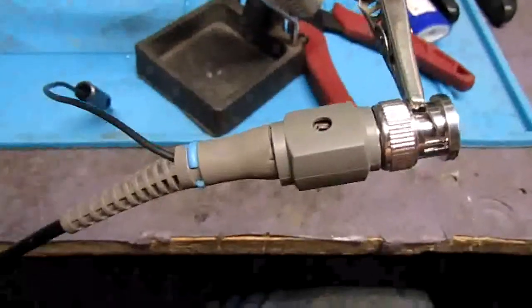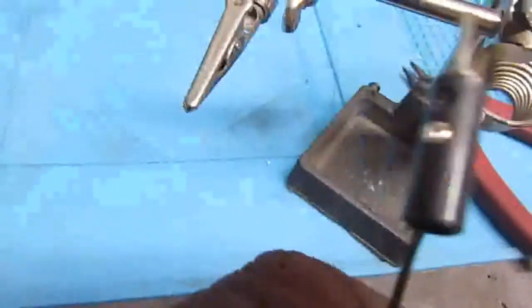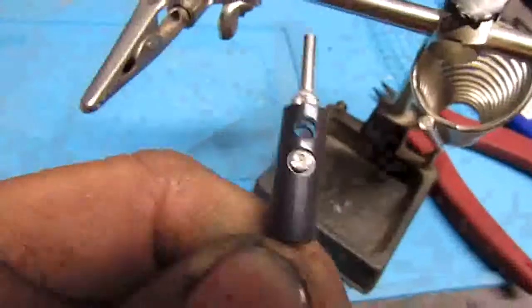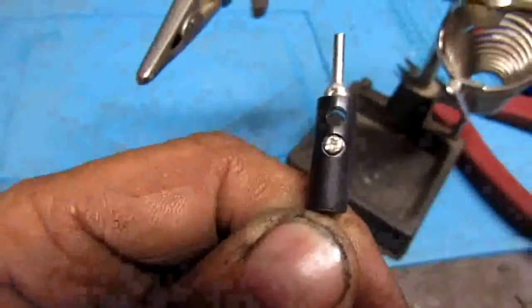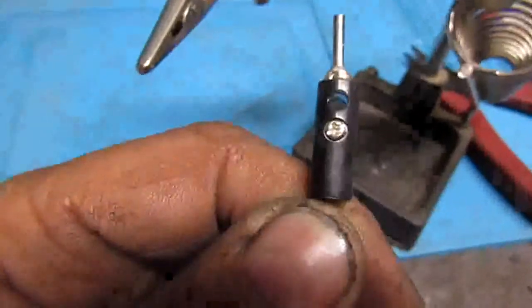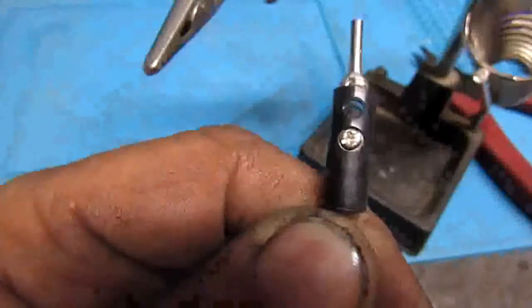So this is what it looks like reassembled. We've got our mini banana plug. Now I don't particularly like these. It's one of my eBay mistakes. The screw is directly connected to the hot side, so I tend to put some heat shrink over the top of these.